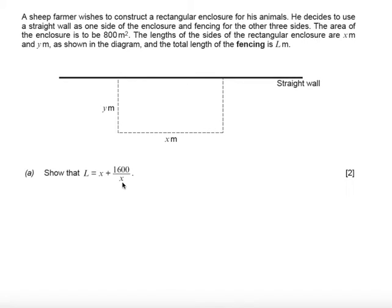Show that l equals x plus 1600 over x. So looking at this question, l represents the perimeter. So we know the perimeter is equal to l. If I was to calculate l, it would be y plus x plus y, so I'd get x plus 2y.